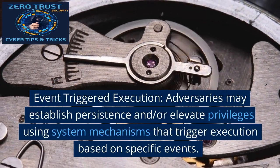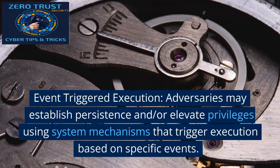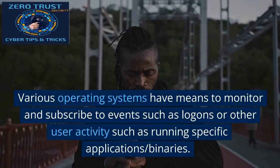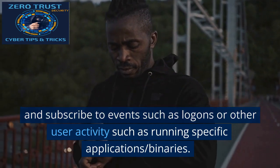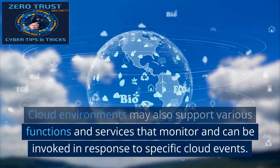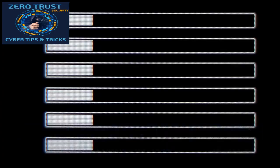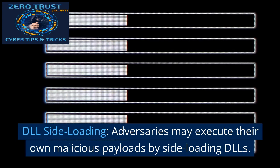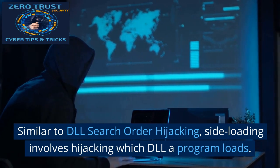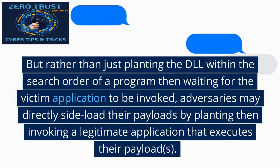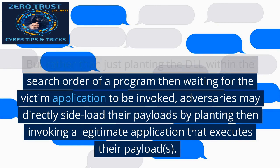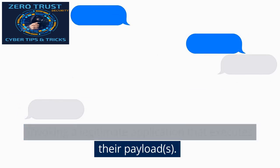Event Triggered Execution: adversaries may establish persistence and/or elevate privileges using system mechanisms that trigger execution based on specific events. Various operating systems have means to monitor and subscribe to events such as logons or other user activity such as running specific applications or binaries. Cloud environments may also support various functions and services that monitor and can be invoked in response to specific cloud events. DLL Side Loading: adversaries may execute their own malicious payloads by side loading DLLs. Similar to DLL search order hijacking, side loading involves hijacking which DLL a program loads. Rather than just planting the DLL within the search order, adversaries may directly side load their payloads by planting then invoking a legitimate application that executes their payloads.